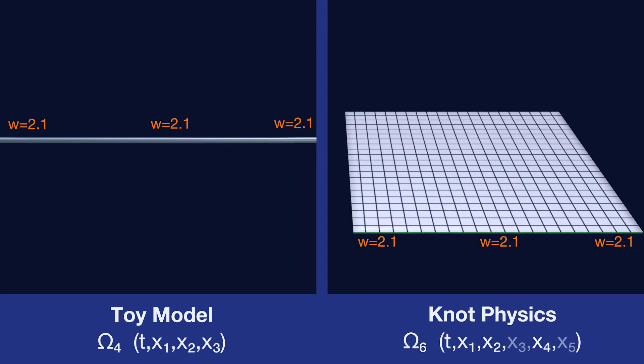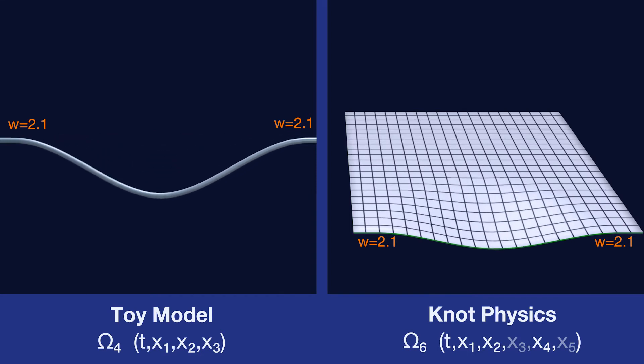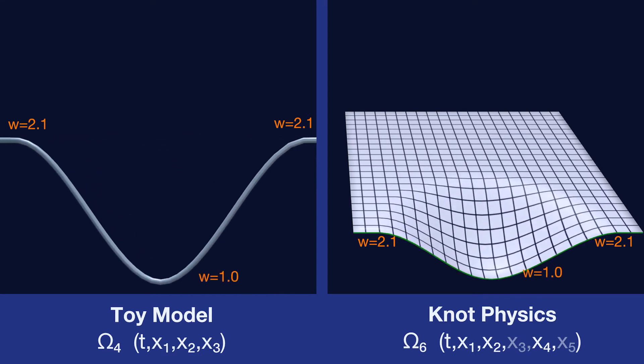We have a branch weight w that's defined at every point on the branch manifold. And now we add the constraint that if the manifold is stretched, the total branch weight is again conserved.